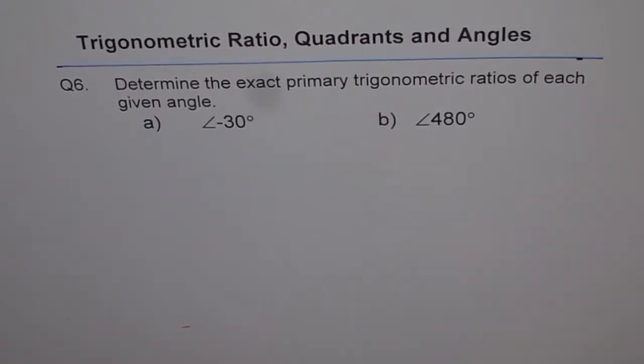Trigonometric Ratio, Quadrants and Angles. Question 6. Determine the exact primary trigonometric ratios of each given angle.